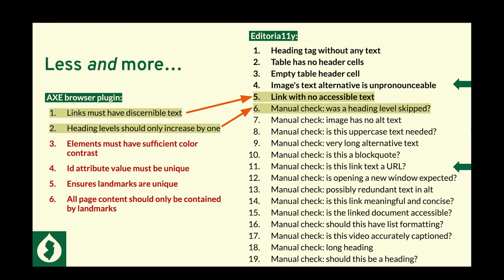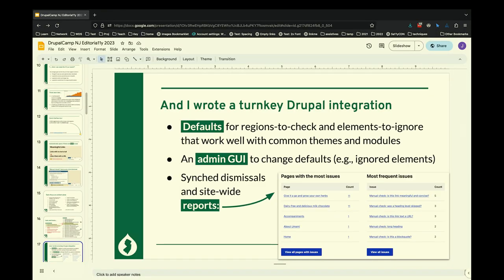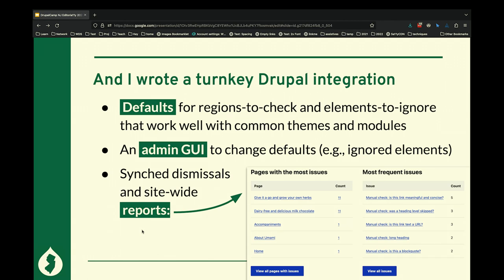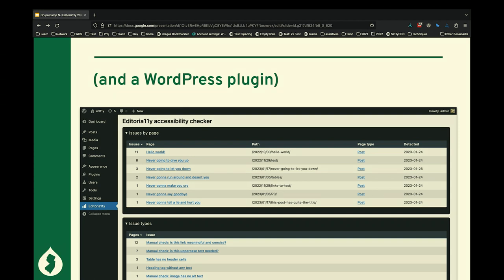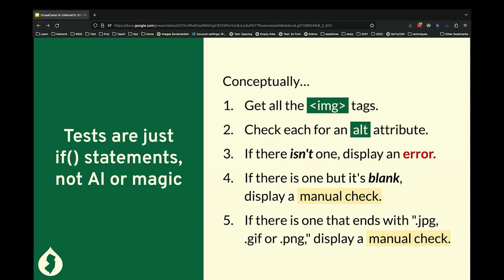So I wrote a turnkey Drupal integration with defaults for regions to check, elements to ignore, an admin GUI, sync dismissals, and site-wide reports. The talk is supposed to be about building. First building block — I had to learn a lot of JavaScript. When I wrote the first version it was jQuery, that's all I knew. At its heart, this was going to be a lot of if statements. There's no magic here — I'm not passing this off to ChatGPT. It's just if statements all the way down: get the image tags, check each image for an alt attribute, if there isn't one display an error, if there is display the manual check.